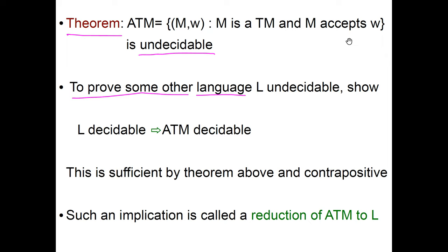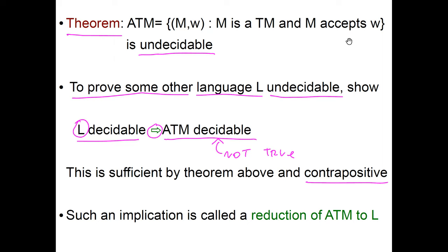To prove that some other language L is also undecidable, we are going to show the following implication: if it was the case that L is decidable, then also ATM is decidable. Because we know that ATM is not decidable, by the contrapositive we also obtain that L is not decidable. We are going to call such an implication a reduction of ATM to L.